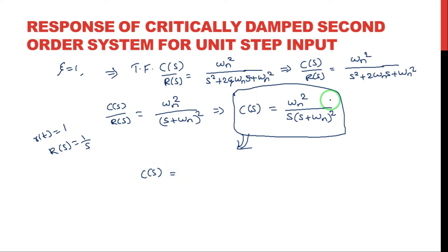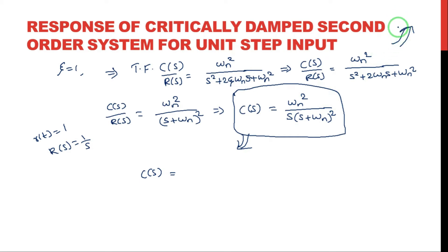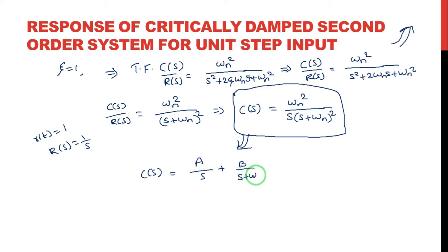For the partial fractions with multiple roots on the transfer function, please click the link above and check the previous video. Applying partial fractions, C(s) becomes A/s plus B/(s + omega_n) plus C/(s + omega_n) squared.